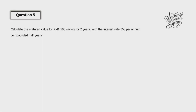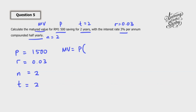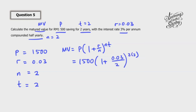Let's look at question number 5. Calculate the matured value for 1,500 ringgit savings for 2 years, so T is 2, interest rate R equals 0.03, and compounded half yearly means N equals 2. We list down: P is 1,500, R is 0.03, N is 2, and T is 2. Substituting into the formula: MV equals 1,500 bracket 1 plus 0.03 over 2, to the power of 2 times 2.